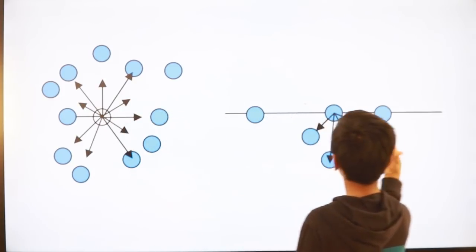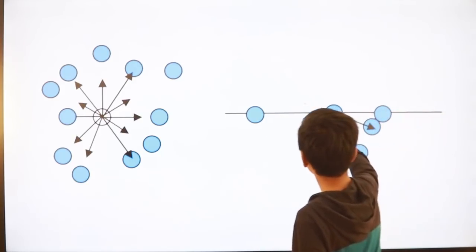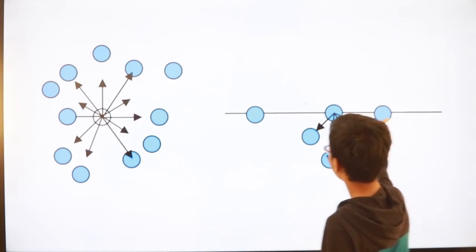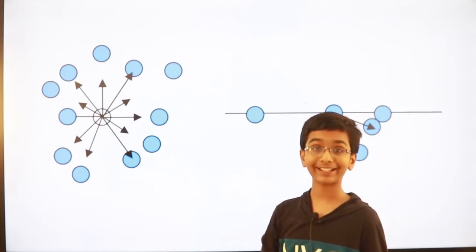But this molecule which is on the surface, as you can see, has unbalanced forces. That makes the molecules on the surface act like a membrane.